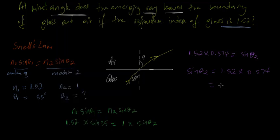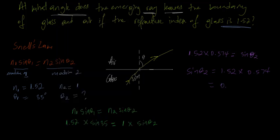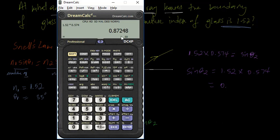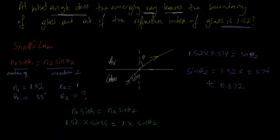And that works out to be 0.872. So sin θ₂ is equal to 0.872. So therefore, to find θ, we'll have to take the inverse sine of both sides. So I'll say sine inverse of sin θ₂ is equal to the inverse sine of 0.872.